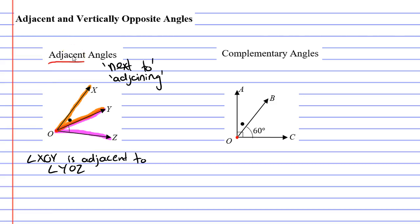In the diagram at right, we have what are called complementary angles. Once again, we have two adjacent angles. We've got angle AOB and we also have angle BOC. These two angles are not just adjacent to each other, but we also say they are complementary. Angle AOB and angle BOC are complementary.